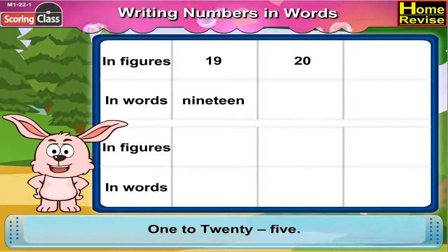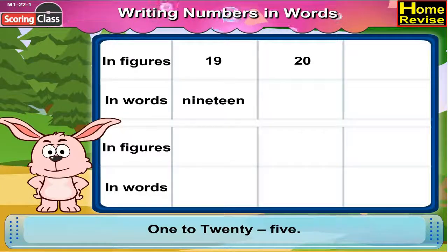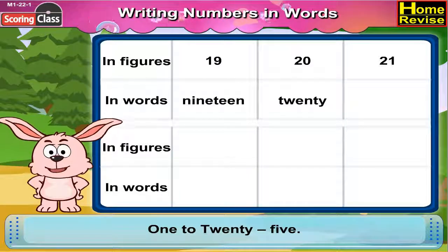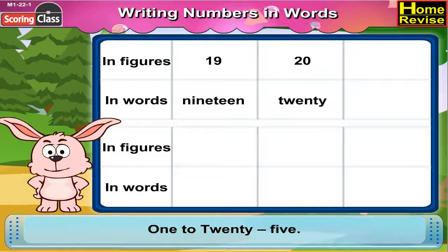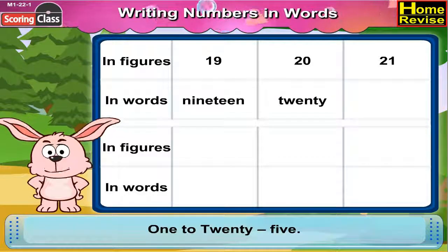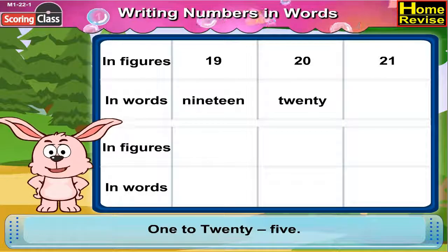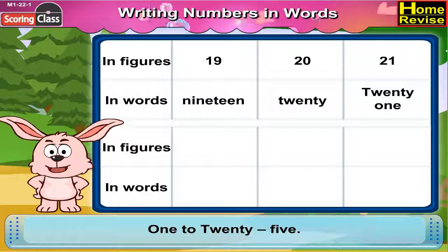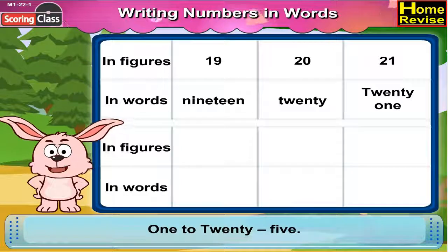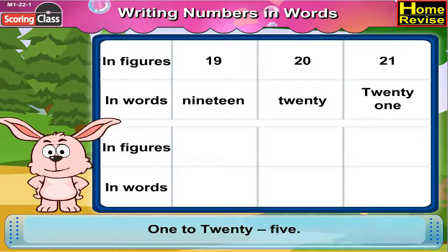20 in figure is 2, 0. In words it is TWENTY. 21 in figure is 2, 1. In words it is T, W, E, N, T, Y, O, N, E.